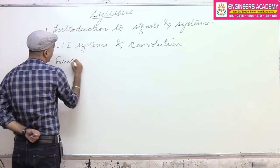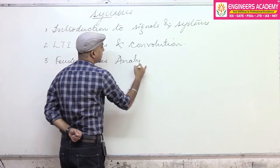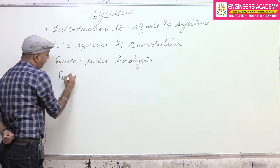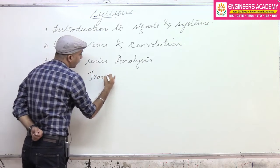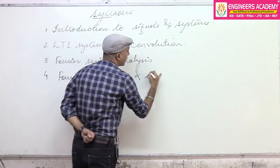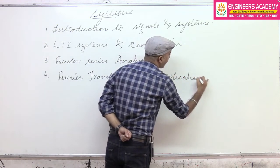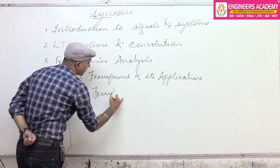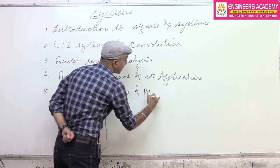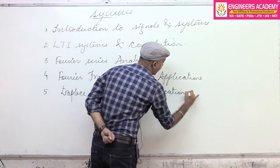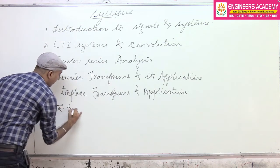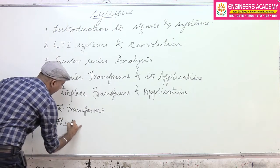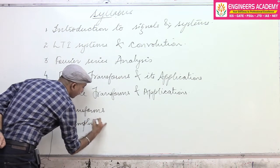Number three would be Fourier series analysis. Then we have to move towards the transforms, which is actually very important. I shall begin with Fourier transforms and its applications, then we will be discussing Laplace transforms and applications, then Z transforms, and the last topic would be sampling theory.